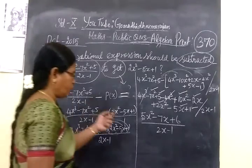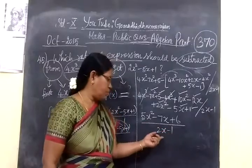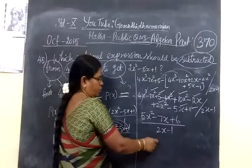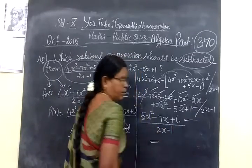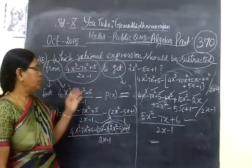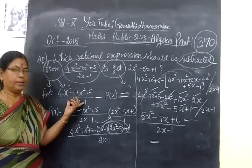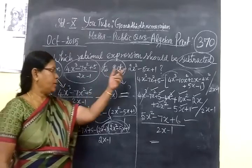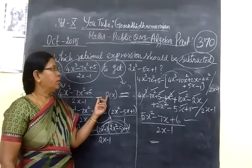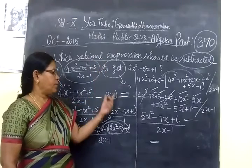So here the answer for this: 5x square minus 7x plus 6 by 2x minus 1. So this one is correct. So this is a very very important question. Only thing, from the beginning what the first step is, then separated. Then which expression P of X equals.